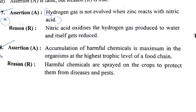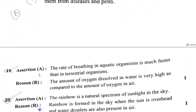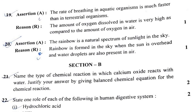Question 18 (Assertion-Reason): Accumulation of harmful chemicals is due to biological magnification at the highest trophic level — this is true. The assertion that harmful chemicals are sprayed on crops to protect them from diseases and pests is also true. However, there is no direct relation between assertion and reason, so option B is the answer.